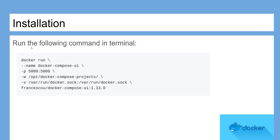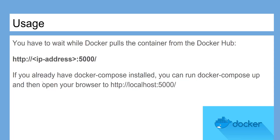This is the command used to install Docker Compose UI. After installation, you have to wait while Docker pulls the container from Docker Hub. Then access the GUI through the port you specified during the running process.